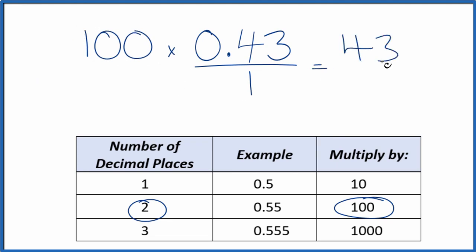And now we have our whole number. But we can't just multiply the numerator here by 100. We also need to multiply the denominator by 100.